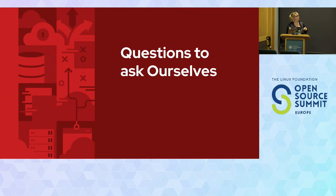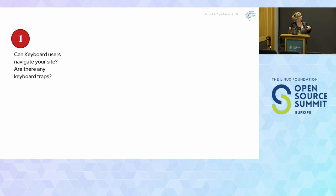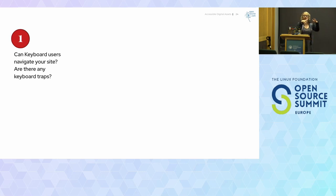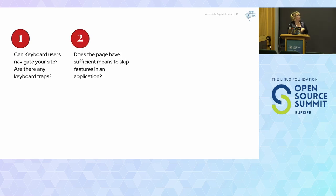Questions to ask ourselves when we design our digital assets. Users with mobility disabilities, including repetitive stress injuries, may not be able to use the traditional mouse pad — so can keyboard users navigate your site? Are there any keyboard traps? If a user can get into a component or modal, can they get out using the keyboard as well? Does your page have a means to skip features? If you have a mega menu, is there a button that says 'skip to main content' so your keyboard user doesn't have to tab through the whole menu to get to your page content?